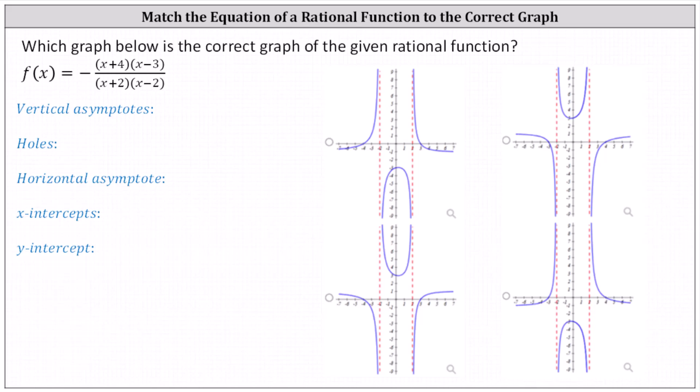Let's begin by determining any vertical asymptotes or holes. Recall that holes are the zeros of the denominator that are also zeros of the numerator. Because there are no common factors between the numerator and denominator, there are no holes.